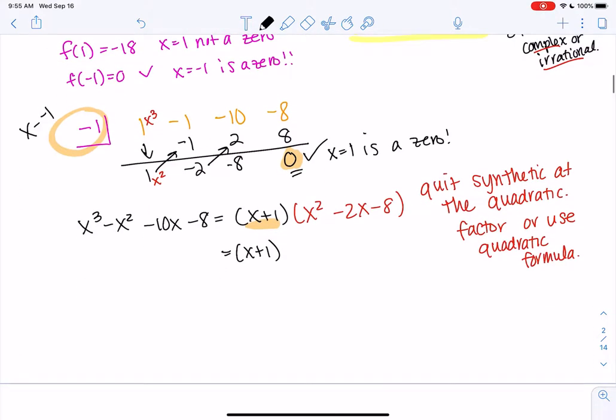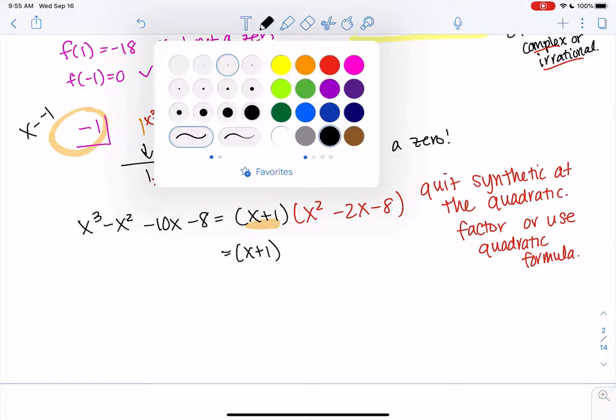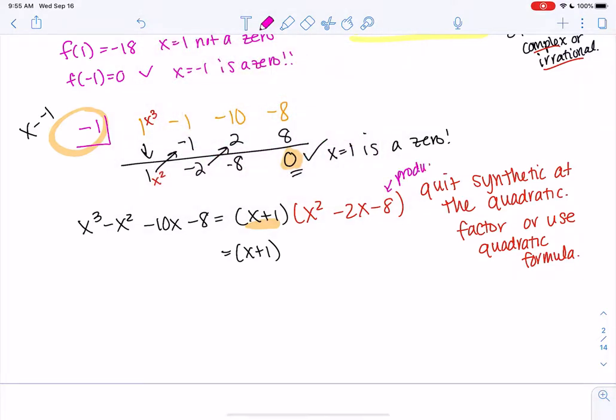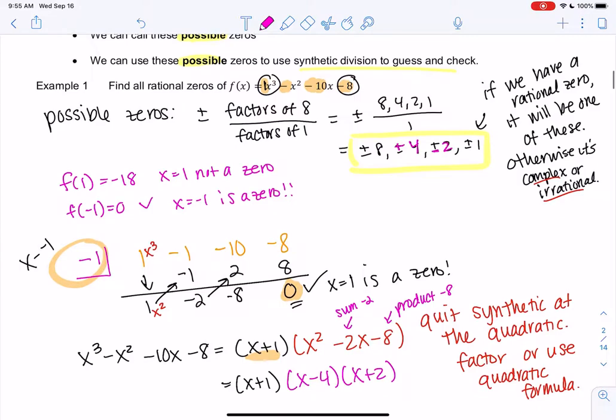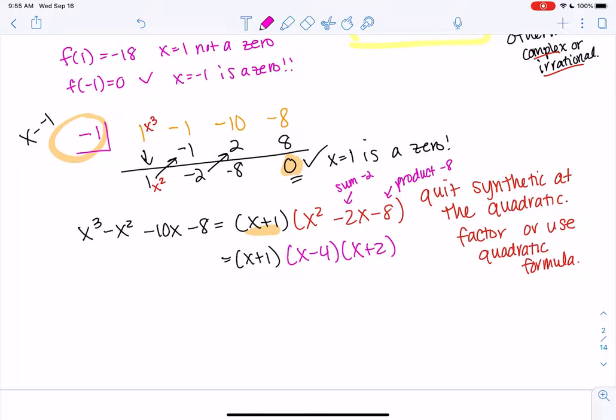So factoring. So we need a product of negative 8 and a sum of negative 2. So like 4 and 2 would make 8. So what would that be? Negative 4 and then positive 2. Those multiply to make negative 8 and they add up to negative 2. And then that means if you had done long division with negative 2, which also fits the pattern, or positive 4, it would have worked as well. And you would have just had a different quadratic in the end. So we found all the zeros. The zeros are negative 1, 4, and negative 2.